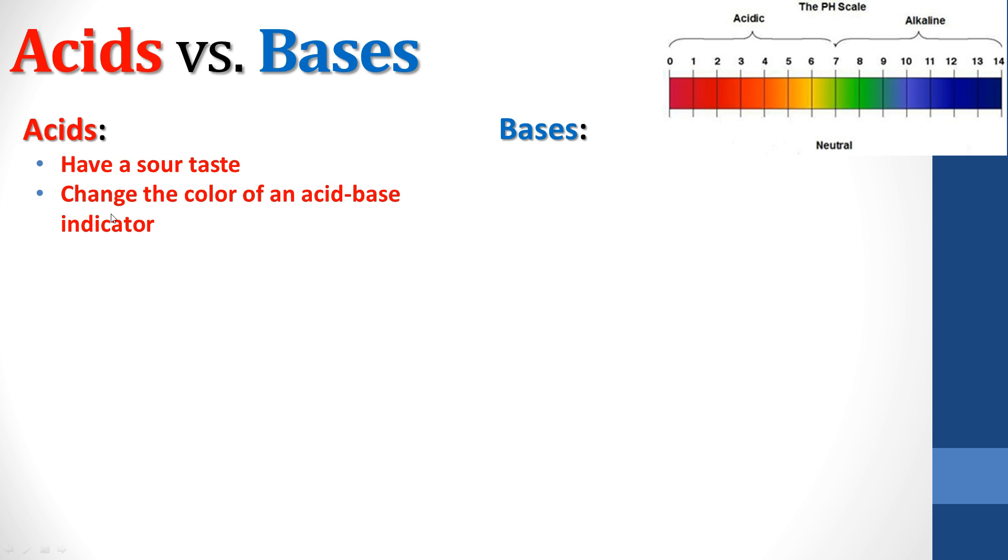Acids are also going to change the color of an acid-base indicator. Usually we're talking about litmus paper. Red is going to be acid. That's why I've color-coded all of the acid stuff that I'm talking about. It's going to be in red. Bases are going to be in blue.